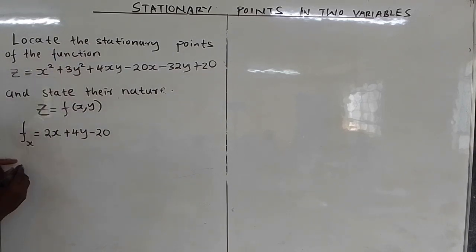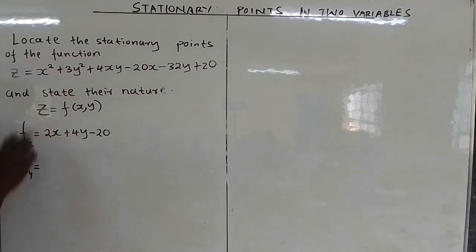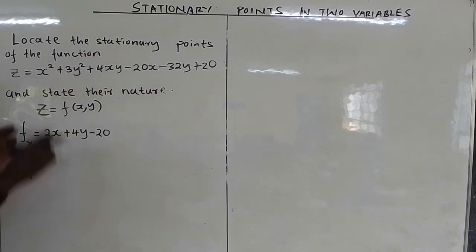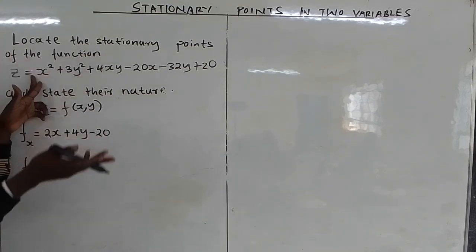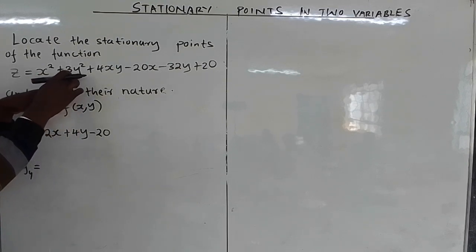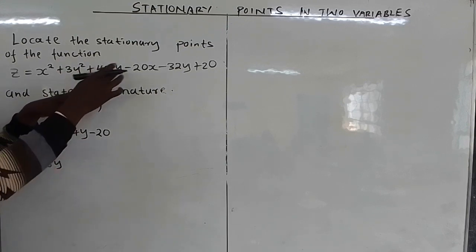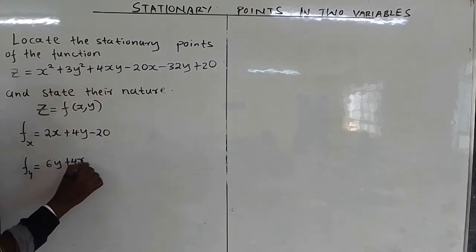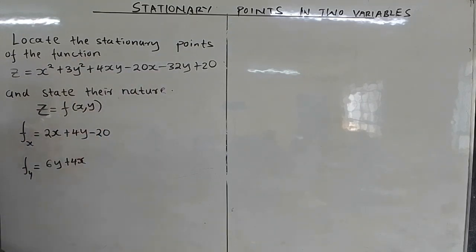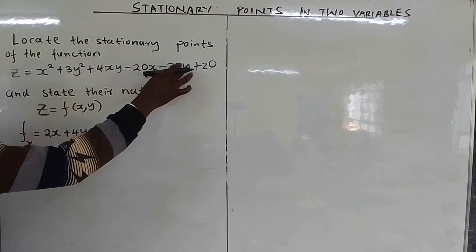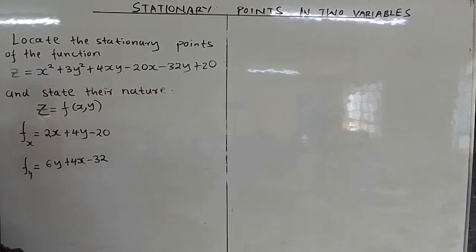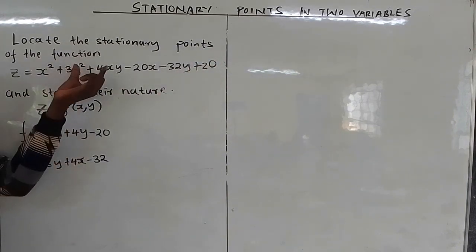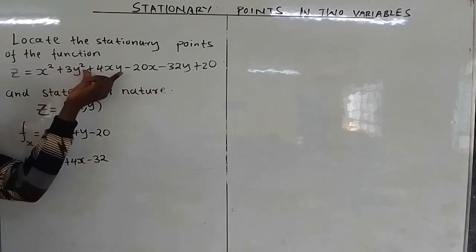Now differentiating the function partially with respect to y means only y is a variable and x is a constant. For x², there is no y, so it differentiates to 0. For 3y², differentiating gives 6y. For 4xy, 4x is a constant and differentiating y gives 1, leaving +4x. For -20x, there is no y so it gives 0. For -32y, differentiating y gives 1, so we get -32. The constant gives 0. So ∂z/∂y = 6y + 4x - 32.